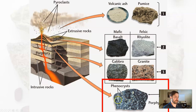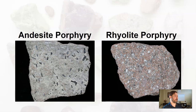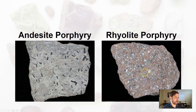The visible mineral pieces that cooled below ground are called phenocrysts, and the rest of it is called the matrix. In andesite porphyry, you can see the bigger black mineral grains, while the rest you can't visibly distinguish. In rhyolite porphyry, you see lighter gray pieces in a red matrix where you can't distinguish individual minerals.